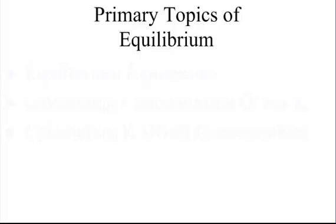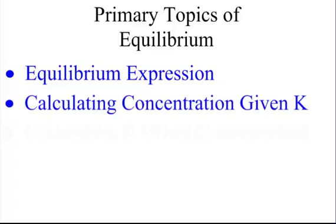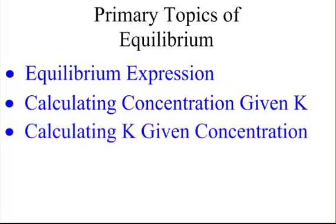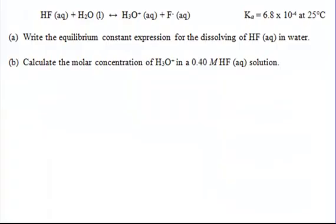Last time when we started talking about primary topics, we explained that there are three different things we need to take a look at. The first one is the equilibrium expression — we covered that in Part 1. This time we're going to be zeroing in on calculating concentration when we're given K, and by the end of the week you want to be an expert at that.